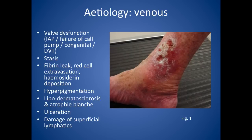This leads to hyperpigmentation, which is due to the iron pigments. You can get lipodermatosclerosis, which is a type of dermatitis followed by hardening and dermal fibrosis. You can also get atrophie blanche, which is a smooth ivory white plaque stippled with telangiectasia and surrounded by hyperpigmentation. This eventually leads to ulceration, and you can also get damage to the superficial lymphatics, with peripheral oedema not uncommon.